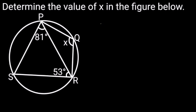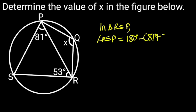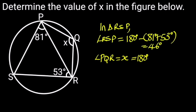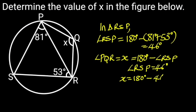Determine the value of X in the figure. Solution: In triangle RSP, angle RSP equals 180 degrees minus (81 degrees plus 53 degrees), which is 46 degrees. Reason: Sum of angles in a triangle. Angle PQR equals X, which is 180 degrees minus angle RSP. Reason: Opposite angles of cyclic quadrilateral.